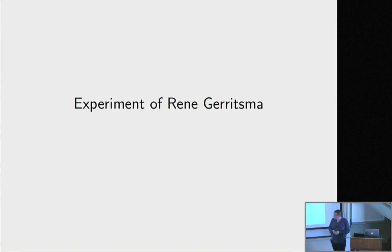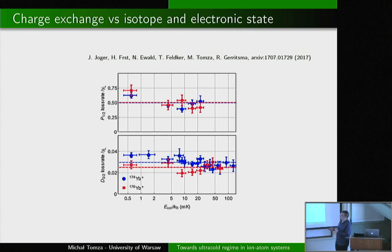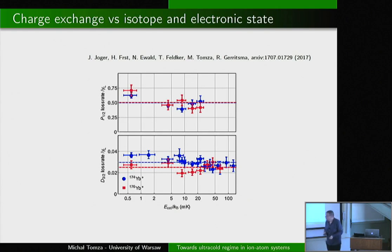These results were from two years ago. Now, presenting new experimental results from the Amsterdam group realized by René Gerizma: ytterbium ions in the Paul trap with fermionic lithium atoms in the MOT, with future plans to use a dipole trap. He investigated the charge exchange process depending on collision energy, isotope, and electronic state. Results versus energy for two different isotopes and two different states (p_{1/2} and d_{3/2}) show they are independent of energy, confirming Langevin regime.